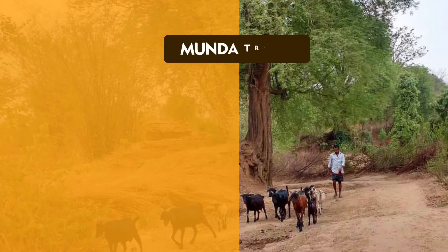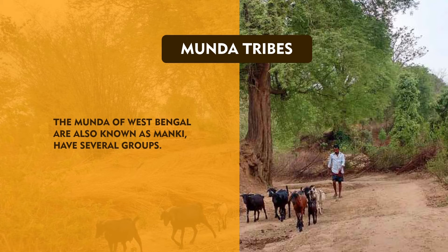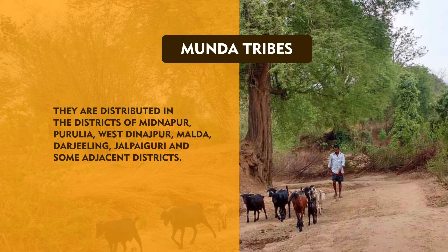Munda tribes: The name Munda is of Sanskrit origin. It means head man of a village. They believe that they are the descendants of Singh Bunga, the supreme god. The Munda people also lend their name to the language called Austro-Asiatic or Mundri or Kolarian, which is one of the four language families of India. The Devanagiri and Bengali scripts are used by them. The Munda of West Bengal, also known as Manki, have several groups. They are distributed in the districts of Midnapur, Purulia, West Dinajpur, Malda, Darjeeling,